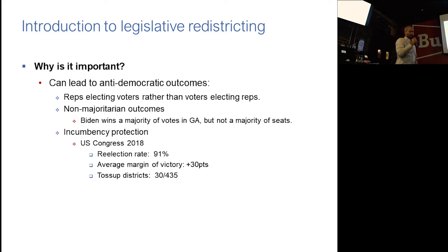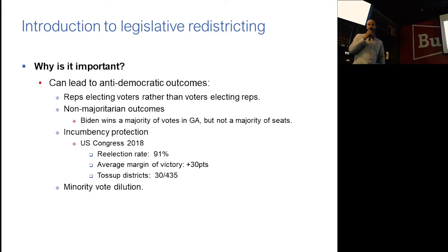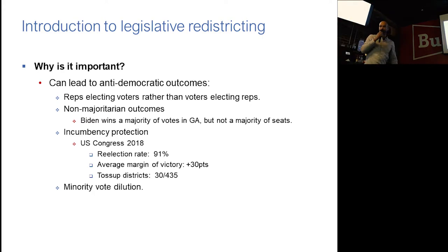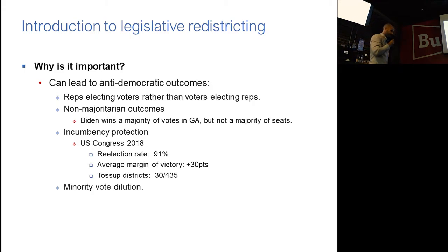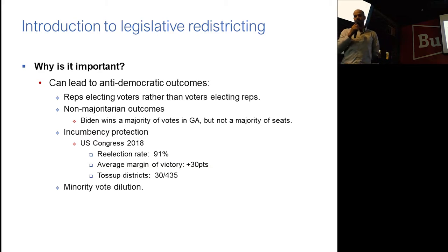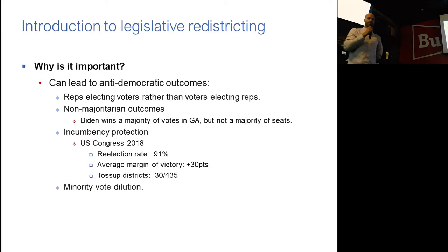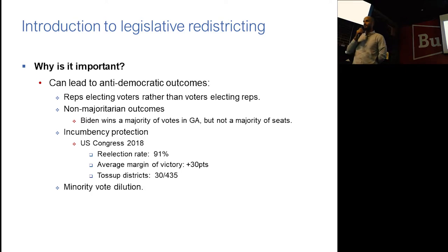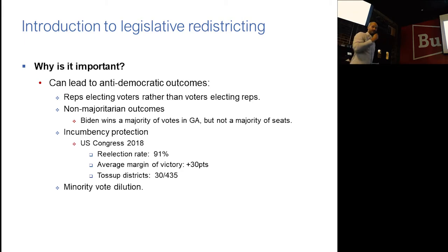Another problem of legislative redistricting is minority vote dilution — the idea that the majority of the legislature who draws the districts can suppress the votes of minorities by sinking those votes into districts where they're not able to have sufficient numbers to elect members of their choice. So these are a number of reasons to be concerned about legislative redistricting.